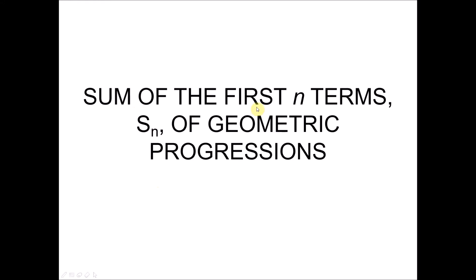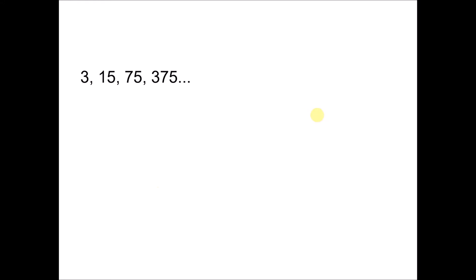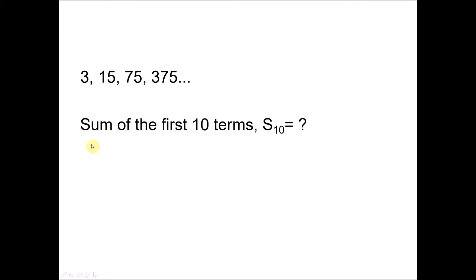So what is the meaning of sum of the first n terms? Given a geometric progression, if you want to find the sum of the first 10 terms, denoted by S10, it means we want to total up the values starting from the first term, which is 3, plus the second term, 15, plus the third, fourth, fifth, sixth, seventh, until the tenth term. That is the meaning of sum of the first 10 terms. We can use a formula to find the total without calculating all the values.